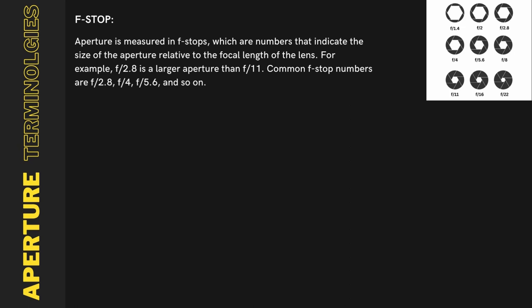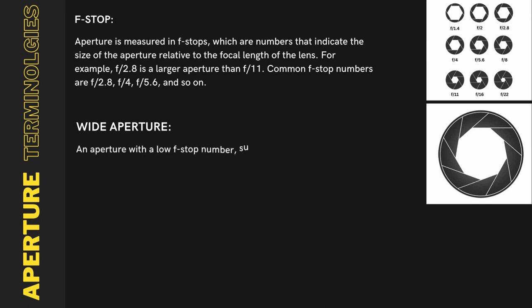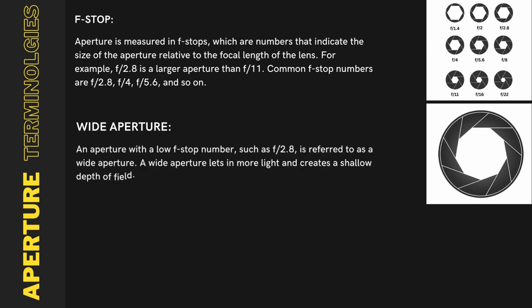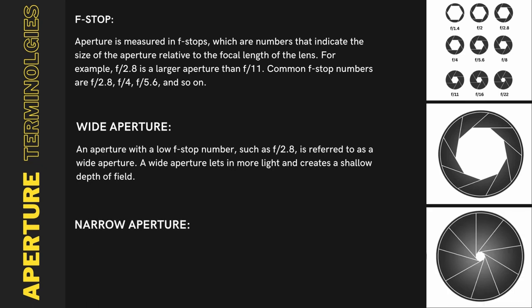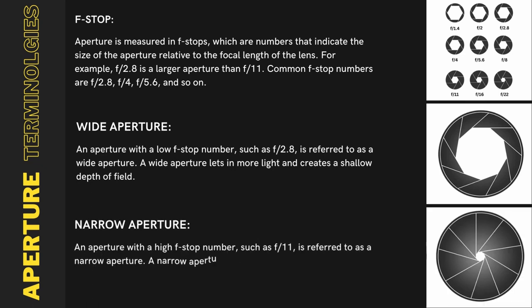For example, f/2.8 is a larger aperture than f/11. Common f-stop numbers are f/2.8, f/4, f/5.6, and so on. A wide aperture — one with a low f-stop number such as f/2.8 — lets in more light and creates a shallow depth of field. A narrow aperture — one with a high f-stop number such as f/11 — lets in less light and creates a deeper depth of field.